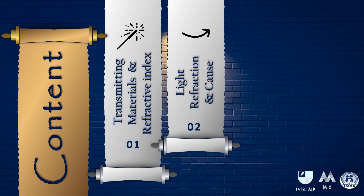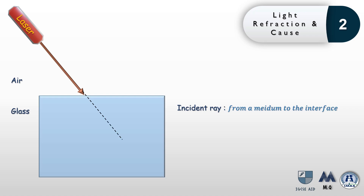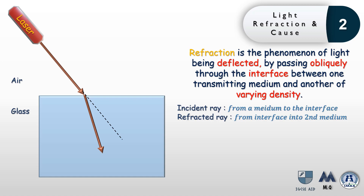Now let's move to the second part and find out the meaning of refraction. If a laser emits a light ray towards glass at an angle — the incident ray — the ray will not continue in a straight path but will deflect. The ray traveling in glass is called the refracted ray, and this whole effect is called refraction. Refraction is the phenomenon of light being deflected by passing obliquely — at an angle — through an interface between one transmitting medium and another of varying density.